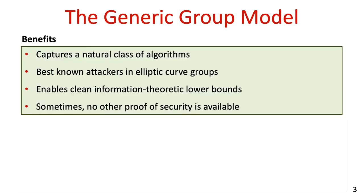Over the years, the Generic Group Model has proven to be very useful, with several important benefits. It captures a natural and wide class of algorithms, and indeed many known algorithms fit within this model. Concretely, the best known algorithms for solving discrete logarithm-like problems in elliptic curve groups are generic. More generally, the Generic Group Model enables one to derive very neat information-theoretic lower bounds, and in some cases this is also the only proof of security that we know of.